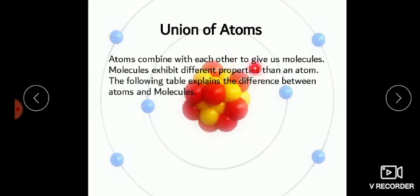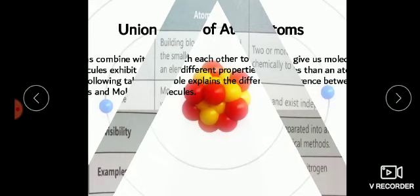Atoms combine with each other to give us molecules. Jab atoms aapas mein combine hote hain toh humein molecule milta hai. Molecules exhibit different properties than atoms — atom aur molecule ki jo properties hoti hain woh different hoti hain. The following table explains the difference between atom and molecule.